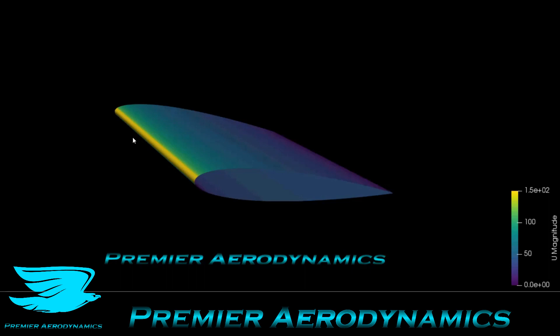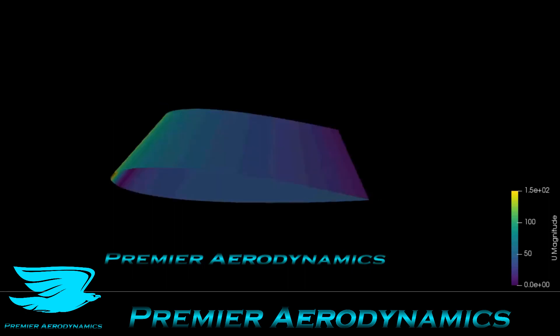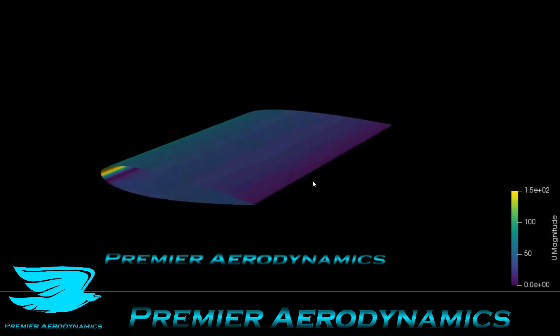You can see at the leading edge that's where very high velocity and acceleration is occurring. As we rotate this around, you can see it gets almost to zero because that's where the wake is starting to happen near the trailing edge.